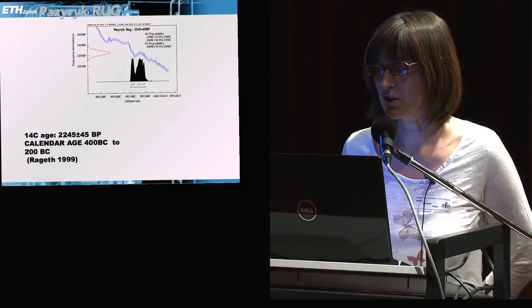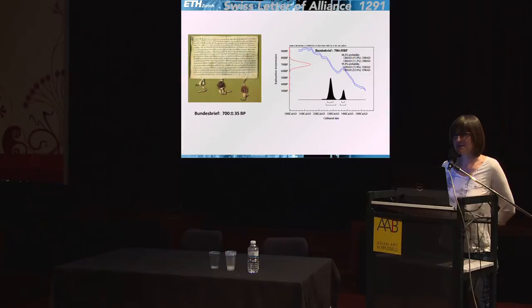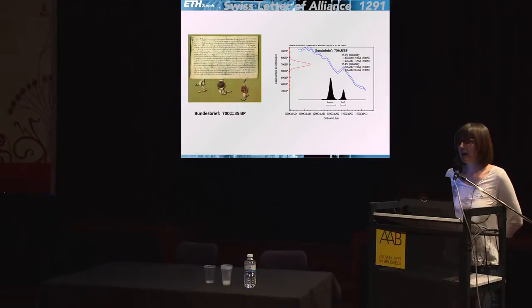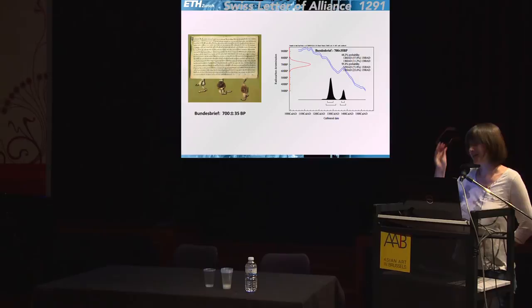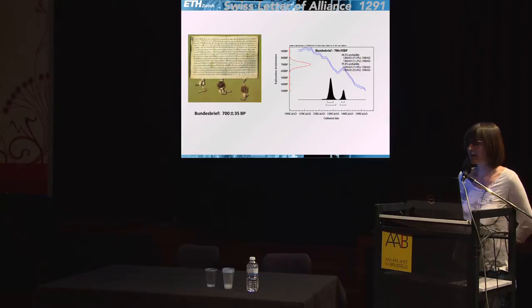Here is a Swiss example where life is a bit easier — a document of the establishment of Switzerland. More than 20 years ago everyone wanted it precisely dated. We measured very precisely for those times, but you see again a double peak. The distribution underneath the calibration curve shows we cannot do better, because nature made this time period radiocarbon-complicated.